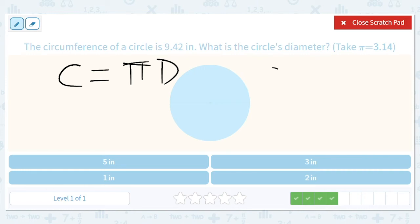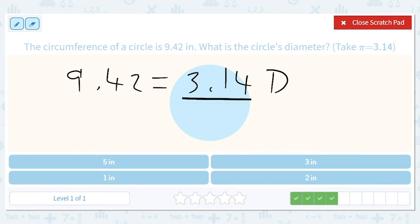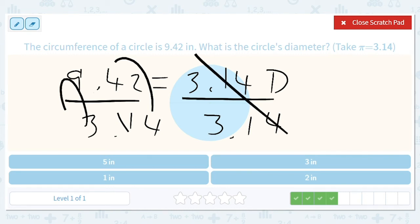We'll do 9.42 equals 3.14 times the diameter. So we're going to take 9.42 and divide it by 3.14. They're being nice to us because 14 times 3 is 42, so that's 3, and that's 3, so it's just going to be 3. So the diameter equals 3.